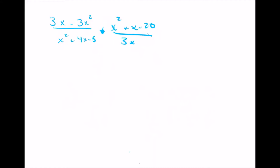The same principle is true when you're multiplying these expressions together. You want to factor them first, then multiply them together, then simplify. So let's go ahead and factor these. 3x minus 3x squared over x squared plus 4x minus 5, times this expression over here. So 3x minus 3x squared — we can take out a 3x, and we're left with 1 minus x. On the bottom, x squared plus 4x minus 5 factors into x plus 5 and x minus 1.